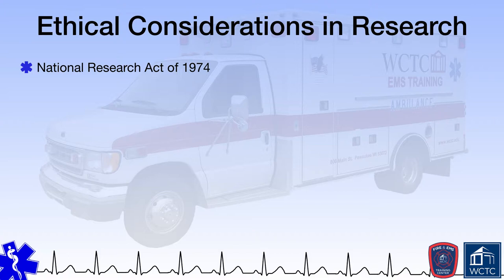Given a history of human research atrocities, Congress passed the National Research Act of 1974, which created the National Commission for the Protection of Human Subjects of Biomedical and Behavioral Research. Two years later, in 1976, the Commission published the Belmont Report, which summarizes basic ethical principles that should underlie the conduct of biomedical and behavioral research involving human subjects while also providing guidelines to ensure such research is conducted in accordance with those principles.